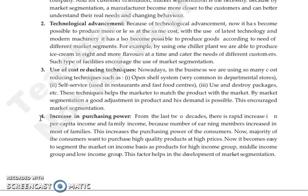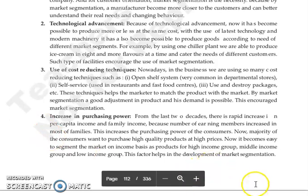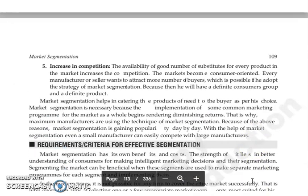The next reason is the increase in purchasing power. The purchasing power of consumers has increased as capital income and family income have grown, with more family members working. Consumers can now afford high-quality products at higher prices. This makes it easier to segment the market on an income basis, distinguishing between high income and middle income groups.